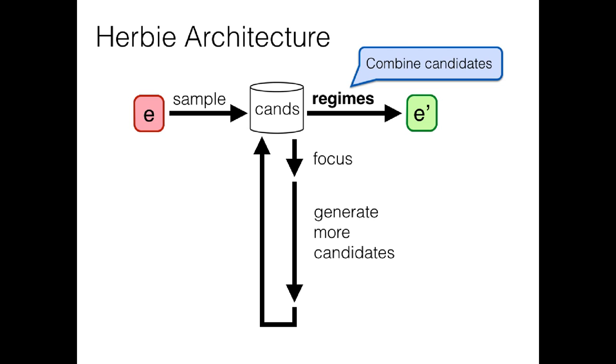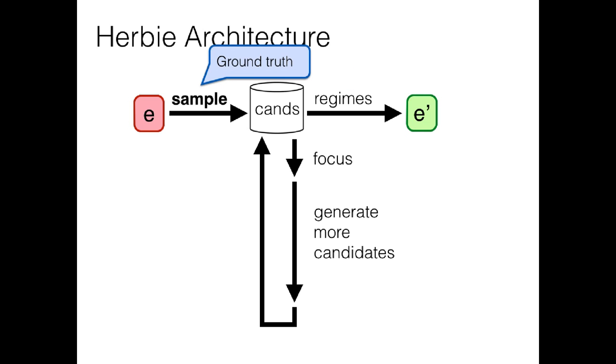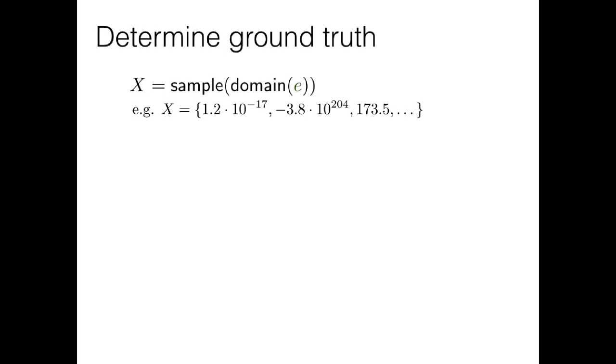So now let me go through these four steps in order. The first is to find a ground truth, an exact value that our formula should compute. We're going to do that with sampling, and more particularly, we're going to find randomly chosen points that are valid inputs for our expression. And when I say random, I mean 64 random bits. This way we sample really small values, really big values, values in between. Each of those can uncover different floating point issues, so it's important to sample all of them.